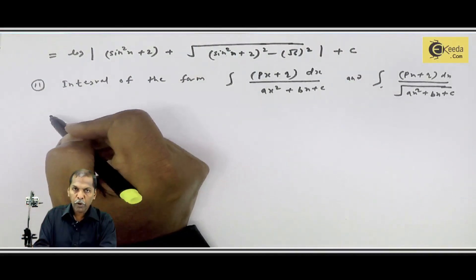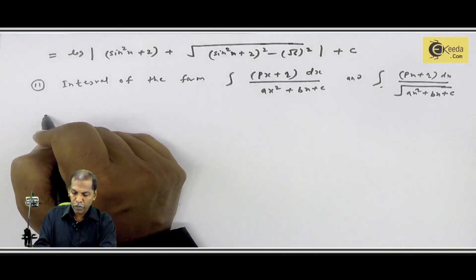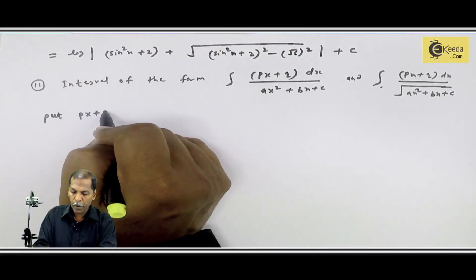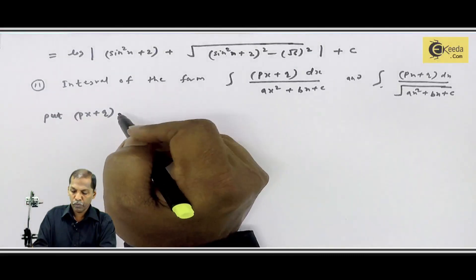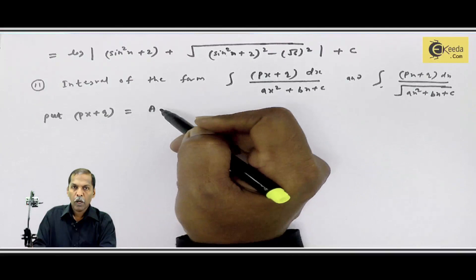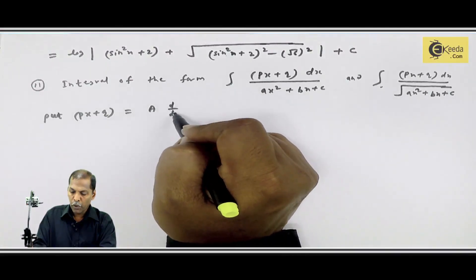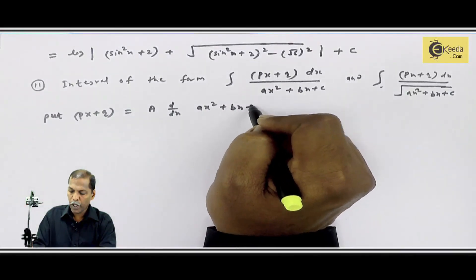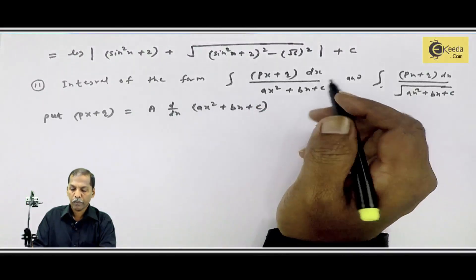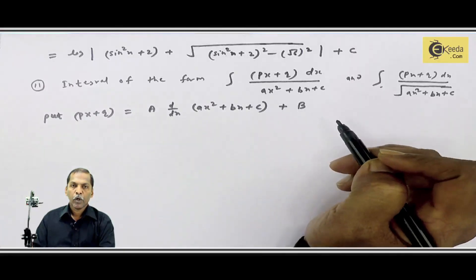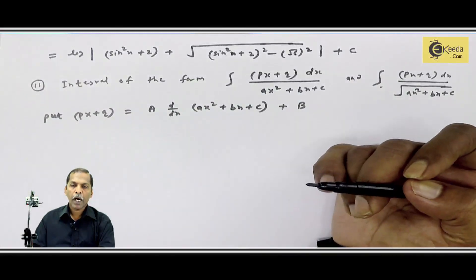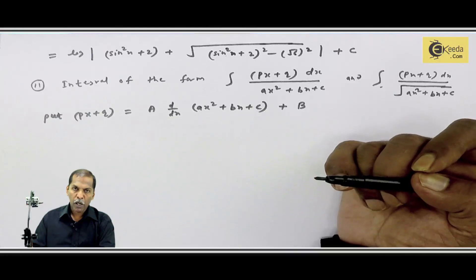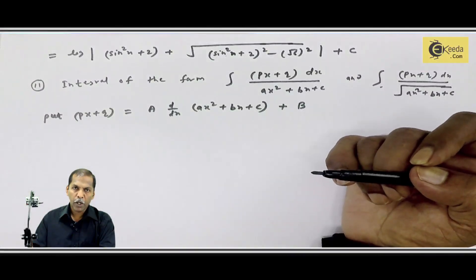What do we have to do? We have to use substitution. We put the numerator Px+Q equal to A into the derivative of the denominator (Ax²+Bx+C) plus B, where A and B represent arbitrary constants. Let us solve some problems related to these two types.